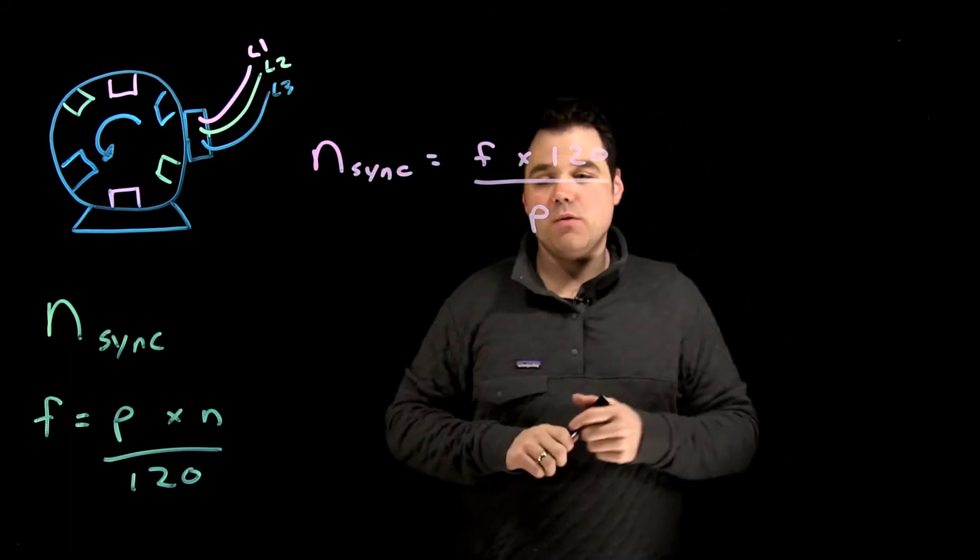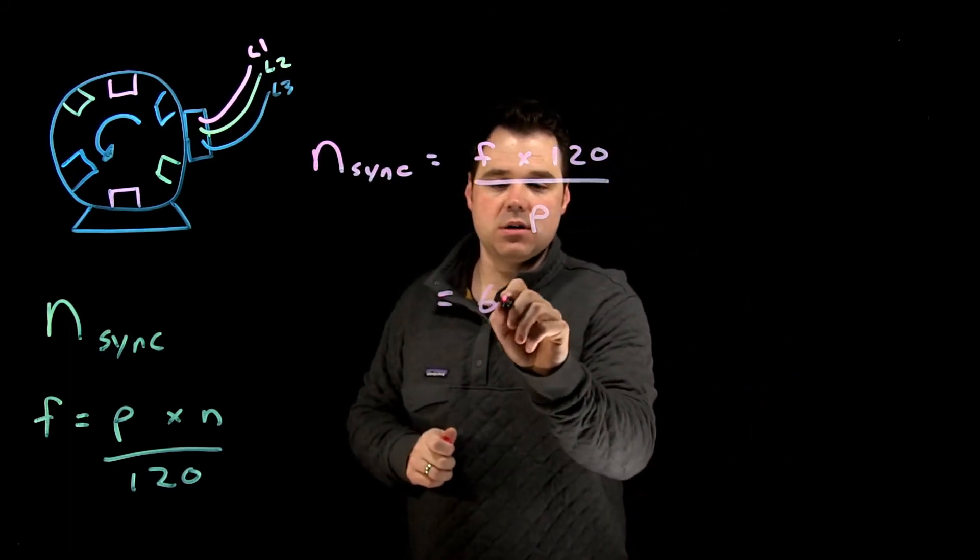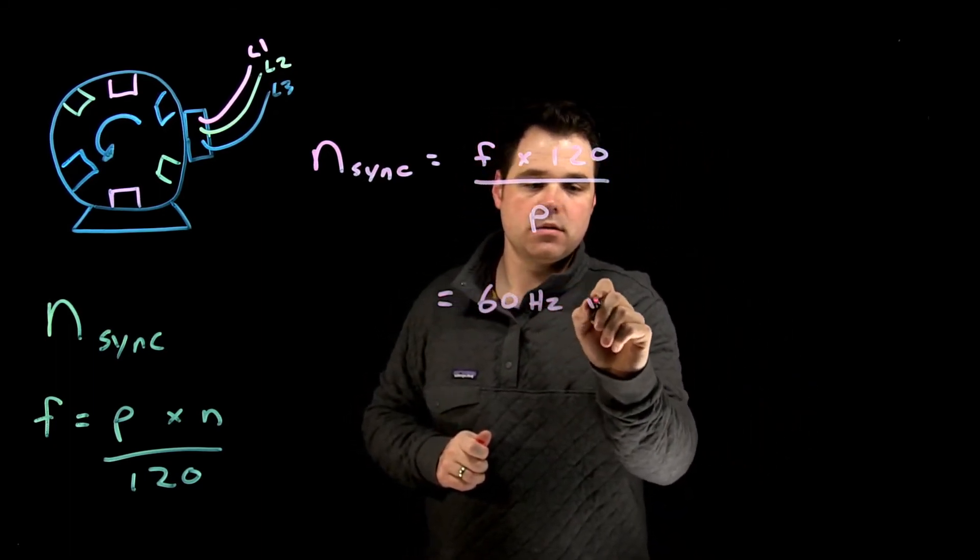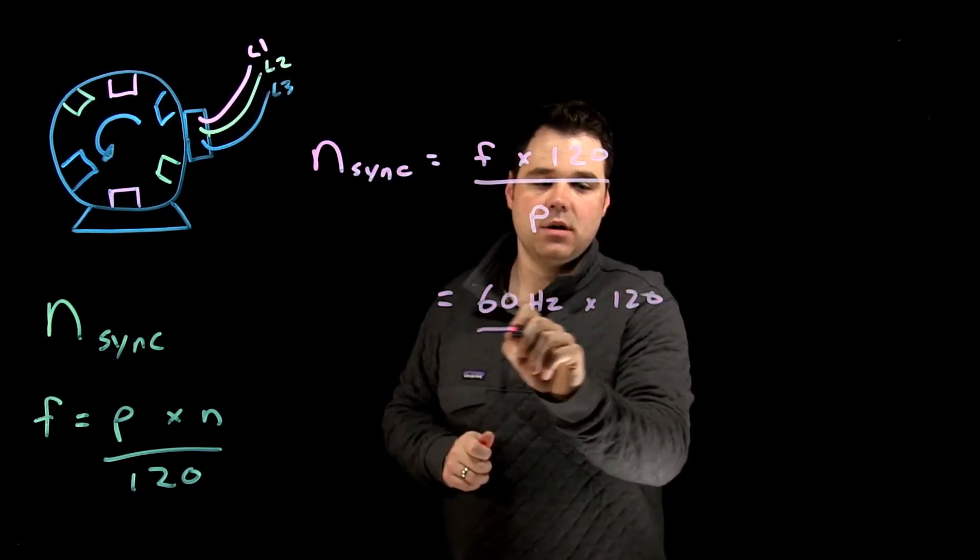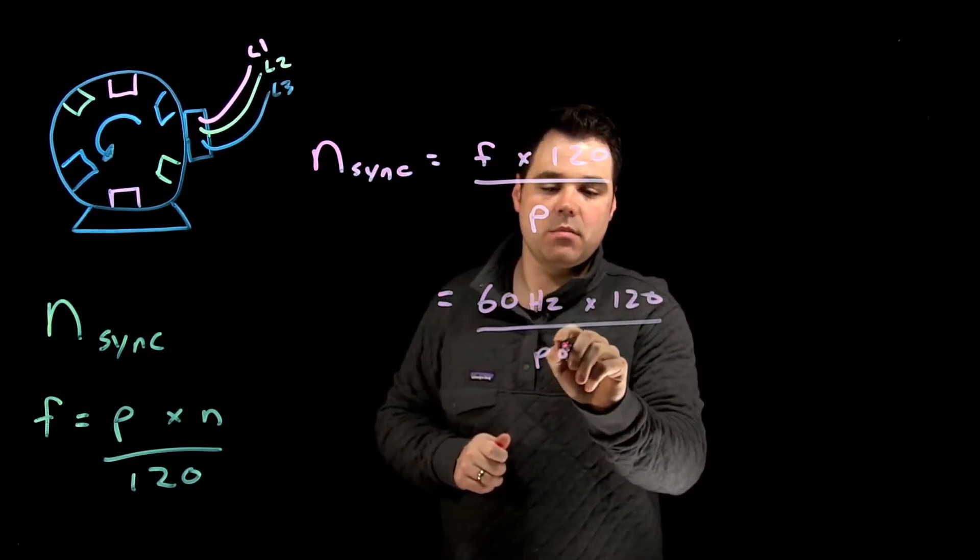So that will always be 60 hertz times 120 divided by the number of poles.